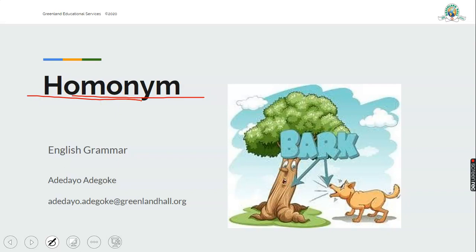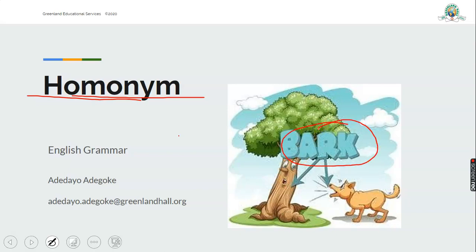We are going to be seeing what a homonym is. If you look at the screen, there's a picture — we have a tree and we have a dog, and we have the word 'bark.' Of course you know that's the sound a dog makes — a dog barks. But 'bark' is also the name of the outer part of a tree trunk. So 'bark' can mean the sound of a dog, or the outer part of a tree.